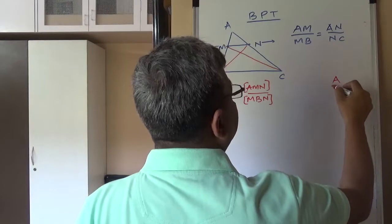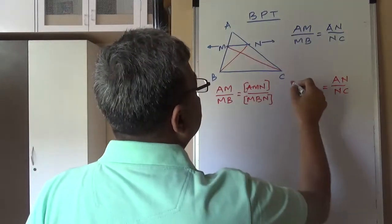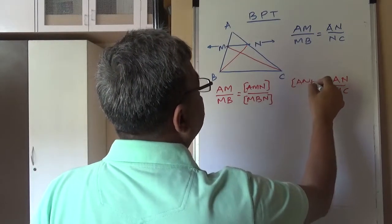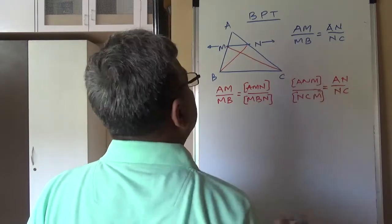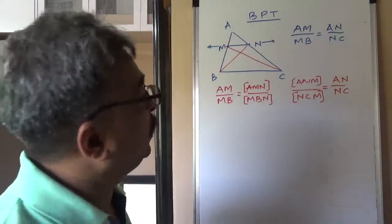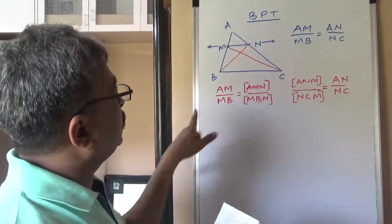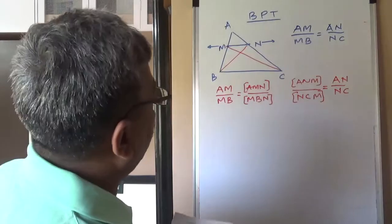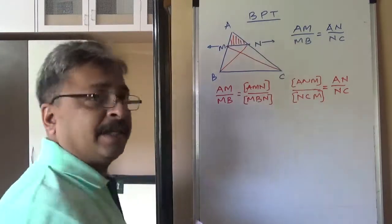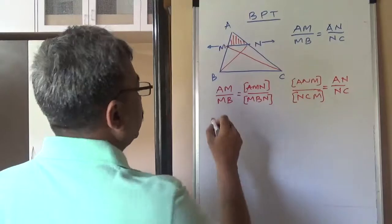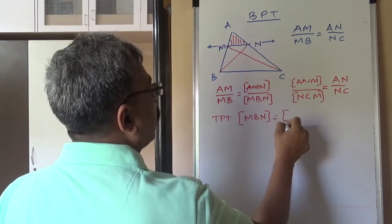Similarly, if I want to write ratio AN upon NC, I can always write it in terms of area which is AMN upon NCM. Now, eventually, we want to show AM upon MB is equal to AN upon NC and we have expressed these two ratios in terms of their areas. If the final result is true, we need to have the ratio of these two areas equal. However, we observe that the numerators are same. Numerator triangle is basically this triangle and its area is same. We need to prove, that is to prove that, area of MBN equals area of NCM.